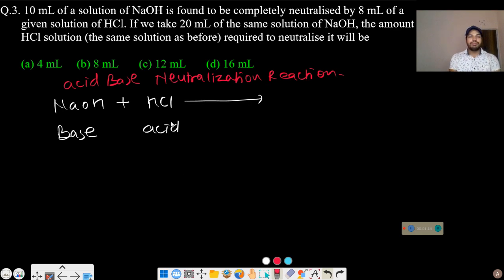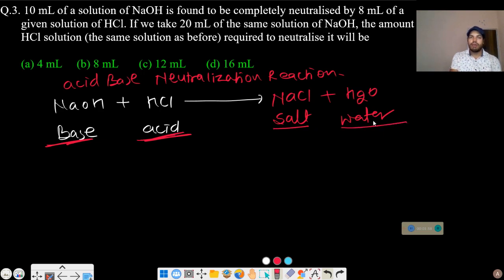In a neutralization reaction, the product is a salt. In this case the salt is NaCl plus water H2O. When a base and acid react, then definitely salt and water are produced, and this type of reaction is a neutralization reaction.